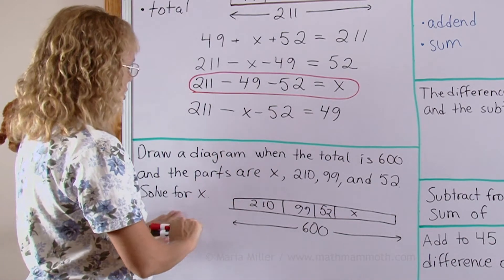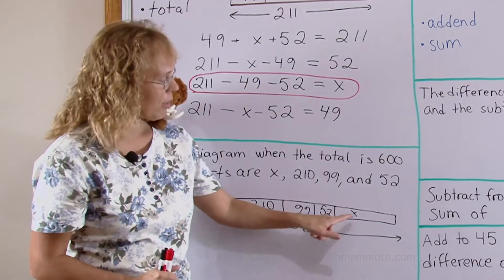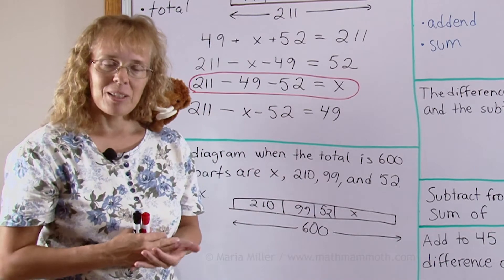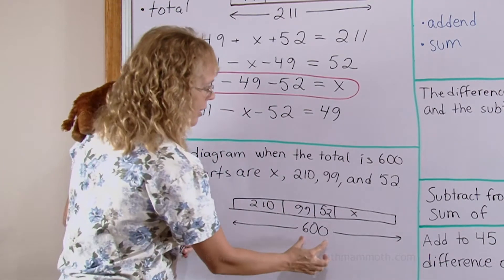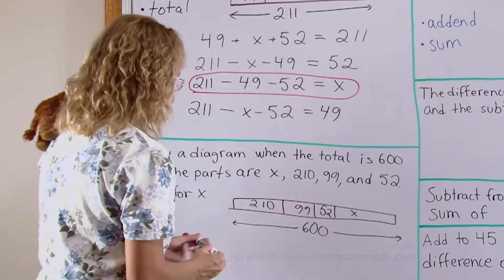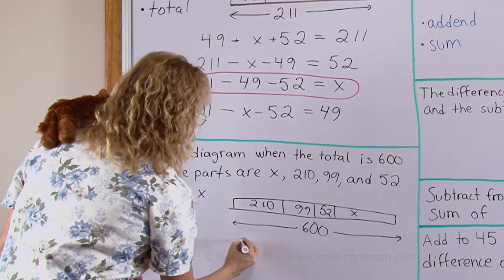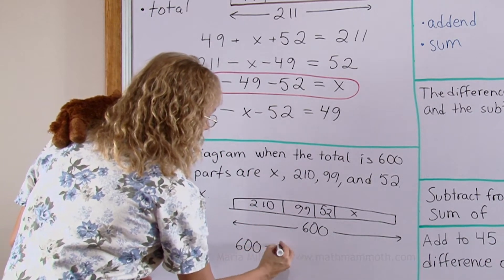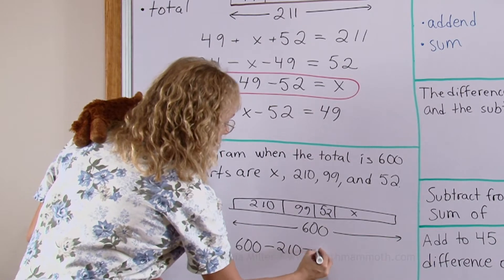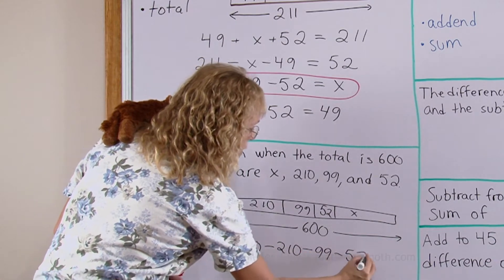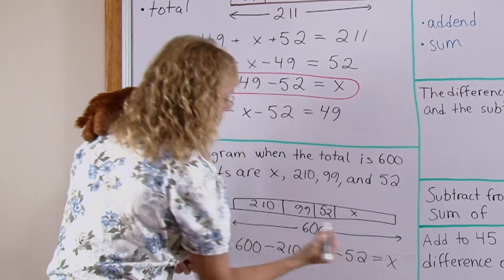Now solve for x. x is one of the parts so I will find it by subtracting. I will take 600 minus those three. That would solve it. So let me write it here. 600 minus that minus that minus 52 equals x.